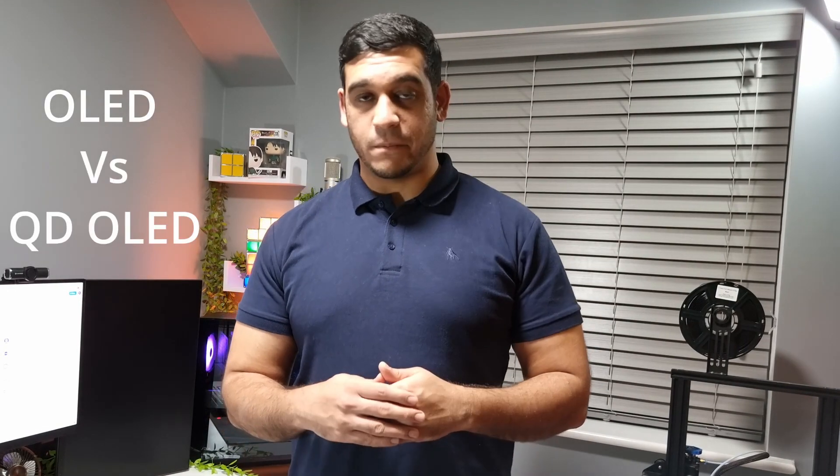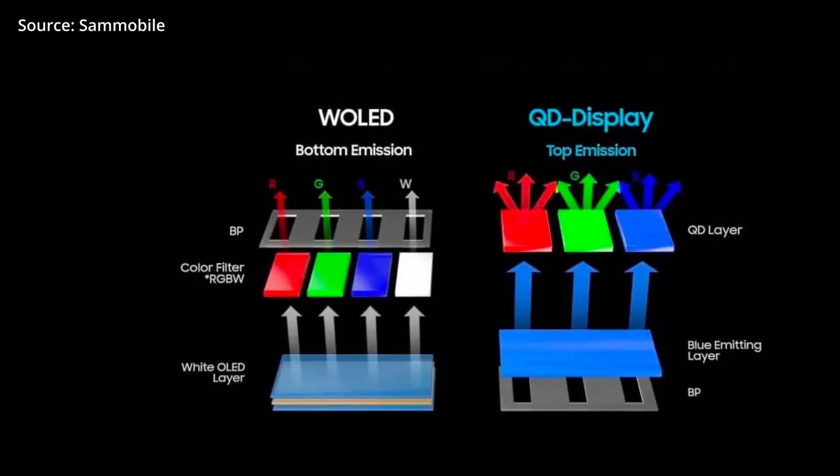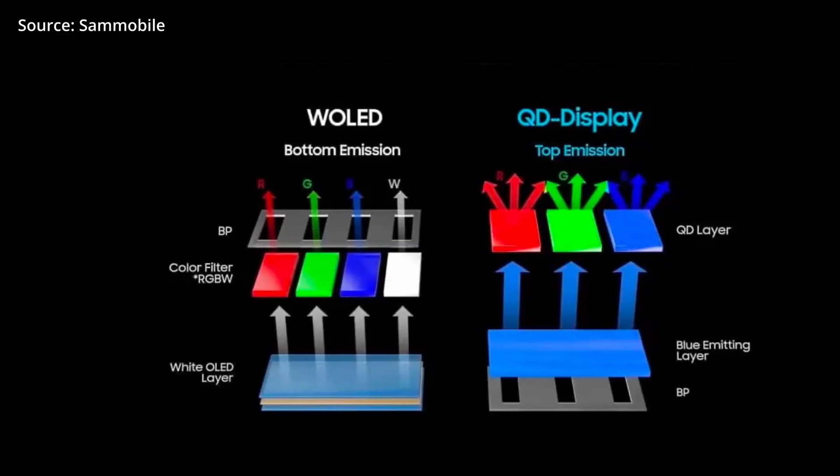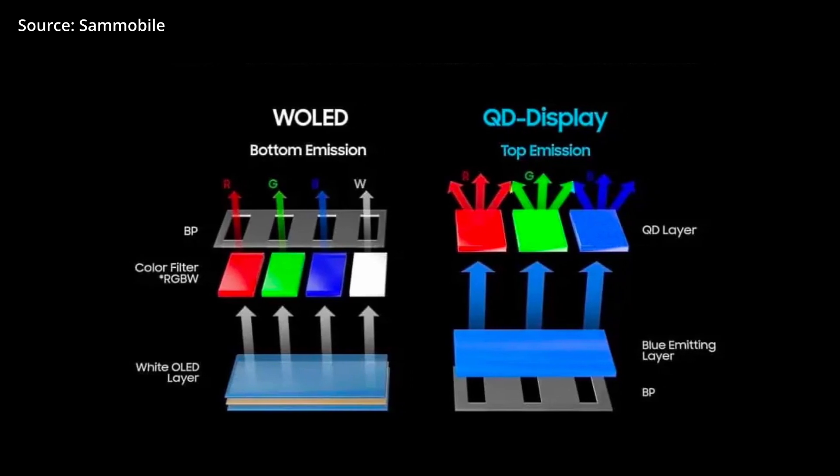What are the differences between an OLED panel and a QD OLED panel? At the core, both of these technologies are the same, but there are some key compositional differences as well as performance differences that you should know about. To start off with the compositional differences, an OLED panel uses a white light source, whereas a QD panel uses a blue light source.